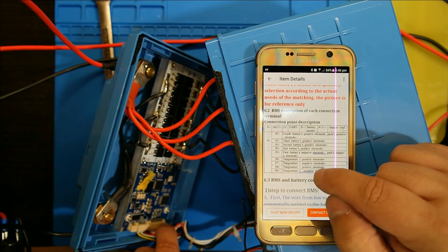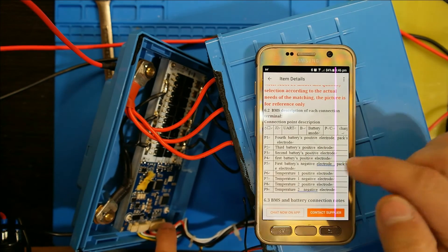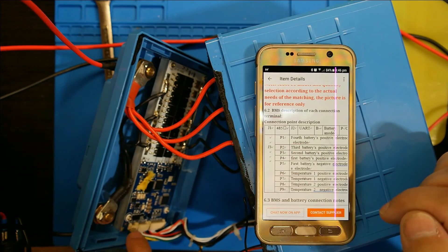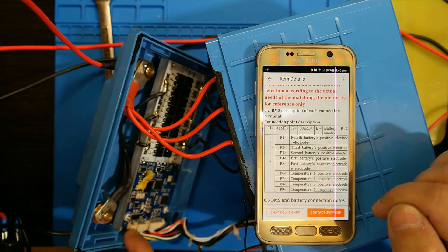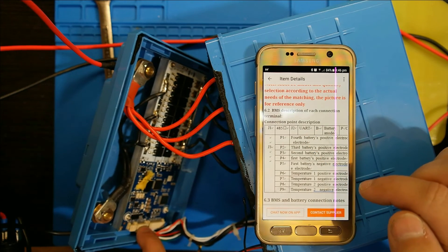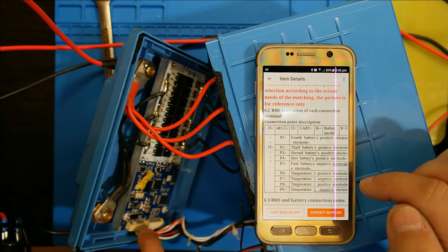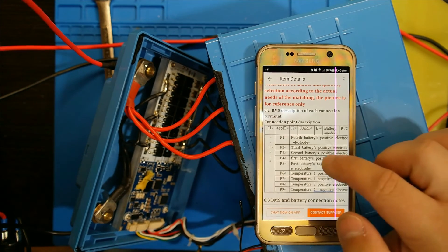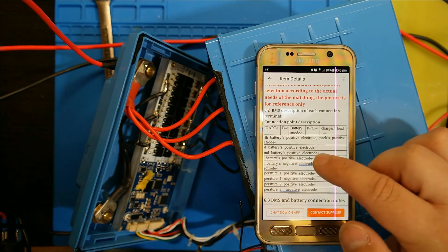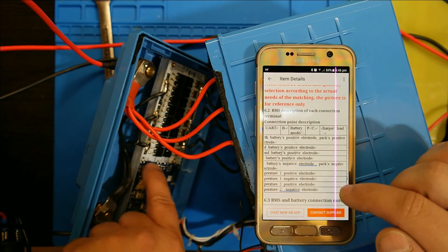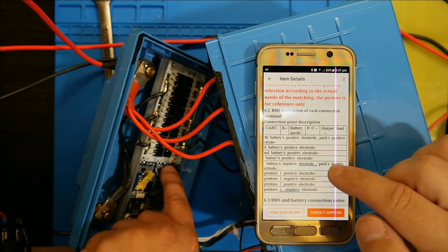Then the last four is a positive and negative for two temperature probes. J1, that's your RS-485 port which is not being used. J2, which is this one right here, that is your UART which is what goes out to the Bluetooth module. So it's using UART to Bluetooth. And then the rest of the stuff, B minus over here, these are all your different connections that they have over here.